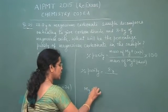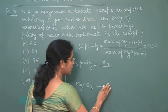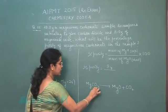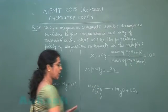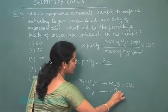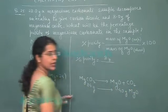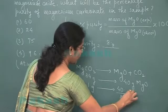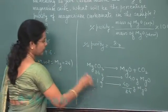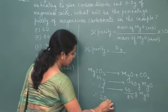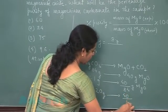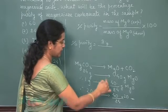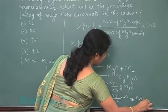Now we calculate the theoretical mass of magnesium oxide. Writing the equation: MgCO₃ on heating decomposes to give MgO and CO₂. One mole of magnesium carbonate, that is 84 gram, gives one mole of magnesium oxide, that is 40 gram. So when 20 gram of magnesium carbonate is heated, it will produce 40/84 × 20 = 9.52 gram of magnesium oxide theoretically.